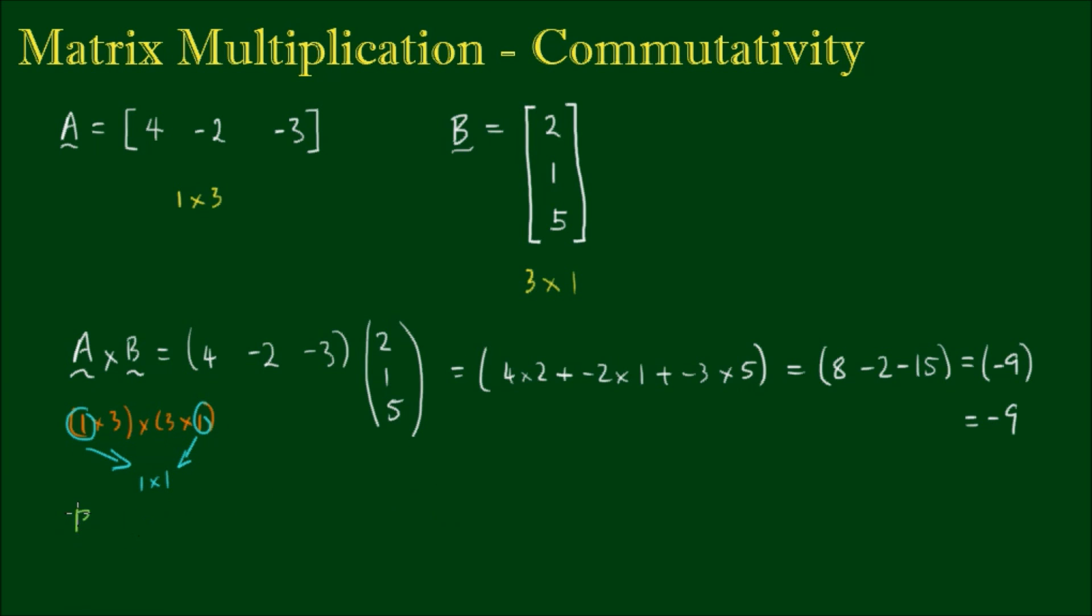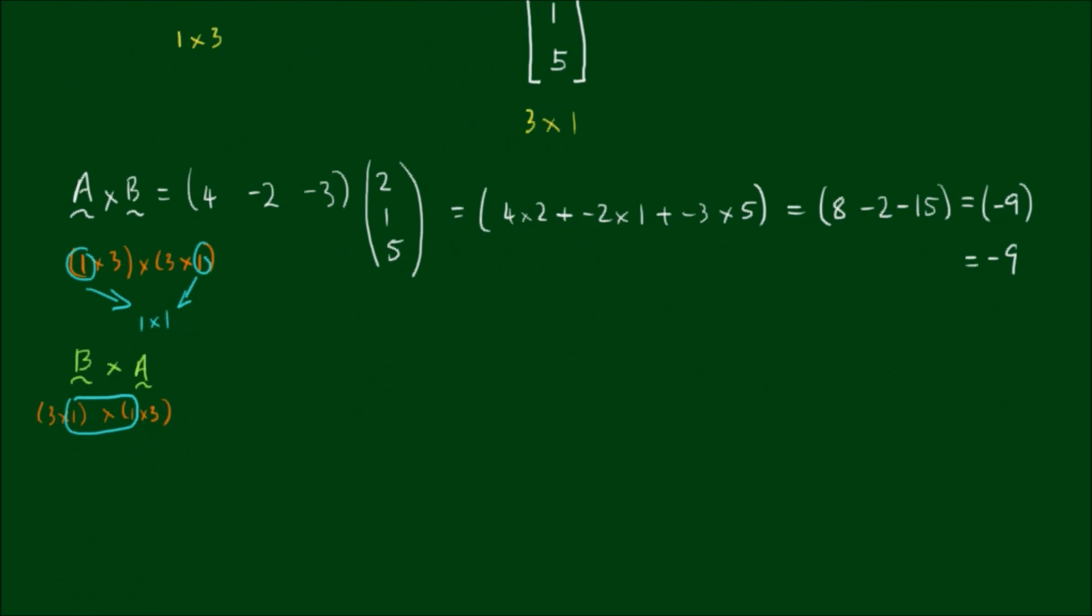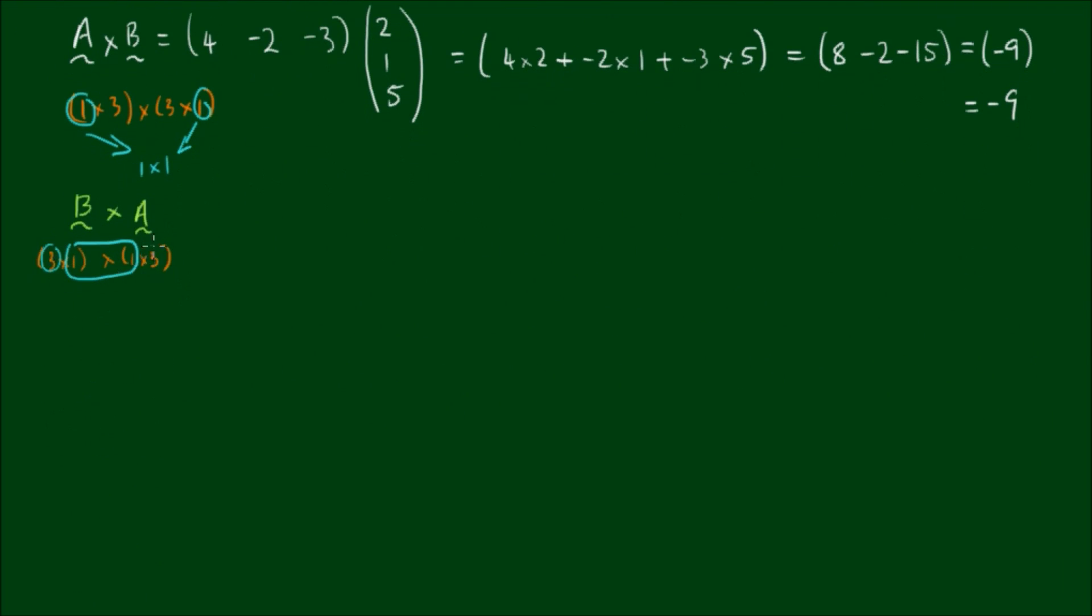Now if we reversed the operation and multiplied matrix B by matrix A, so it's 3 by 1 multiplied by 1 by 3, the operation is still defined because the matrices are still conformable, but this time we should expect to get a 3 by 3 matrix as the result.